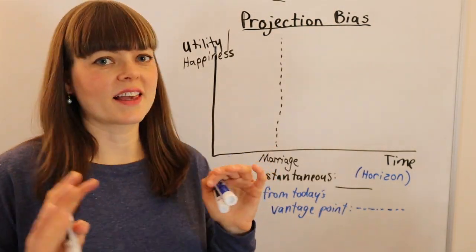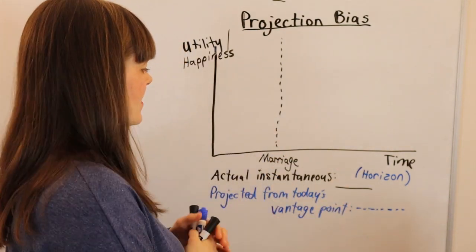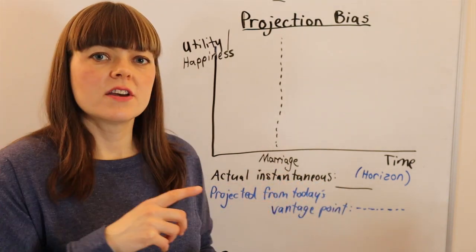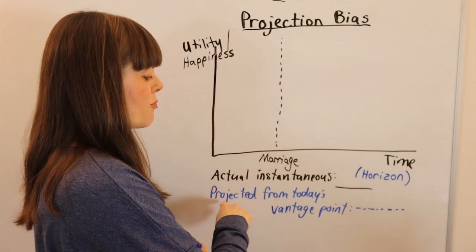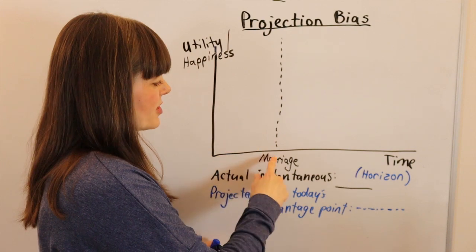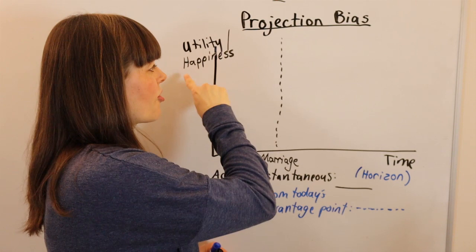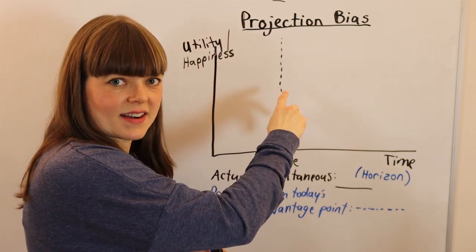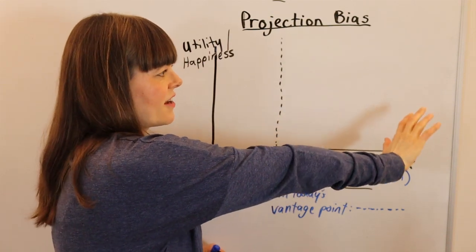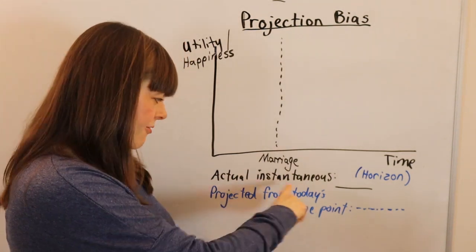This is an exercise I'd like you to try: how does your actual instantaneous utility over time change versus your projected utility from today's vantage point? Imagine the point when you get married. What would your utility or happiness be leading up to that day? What would it be one year after, five years after, ten years after? In particular, think about the difference between these two.